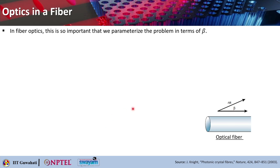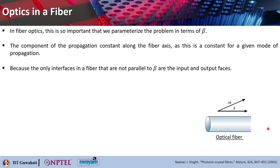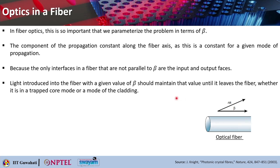In fiber optics, the problem is parameterized in terms of beta — the component of the propagation constant along the fiber axis — which is constant for a given mode of propagation. Since the only interfaces in a fiber that are not parallel to beta are basically the input and output faces, light introduced into the fiber will be given a value of beta and should maintain that value until it leaves, whether in a trapped core mode or a cladding mode.